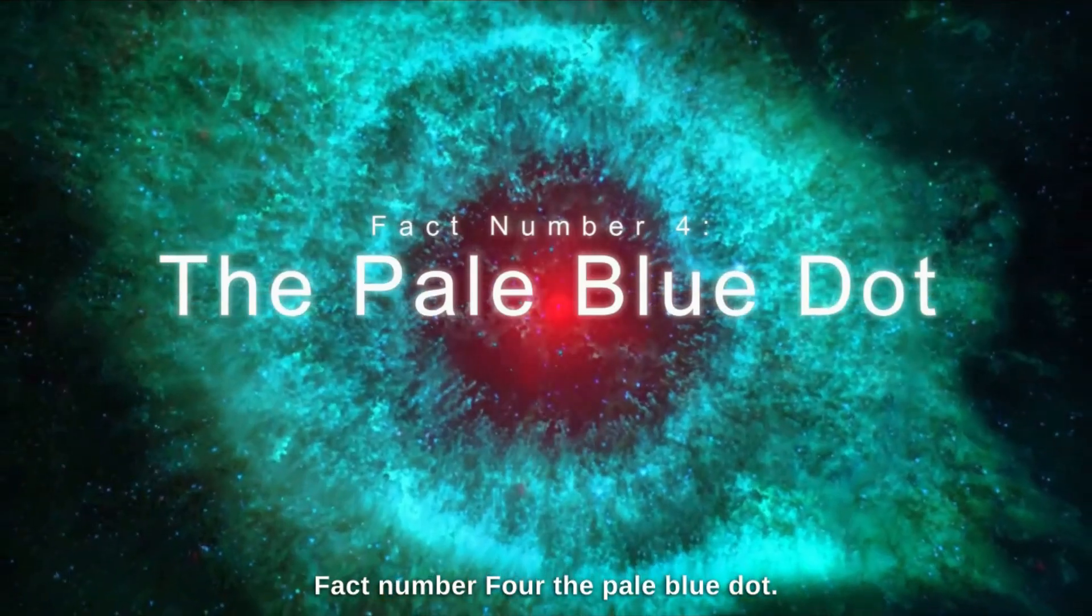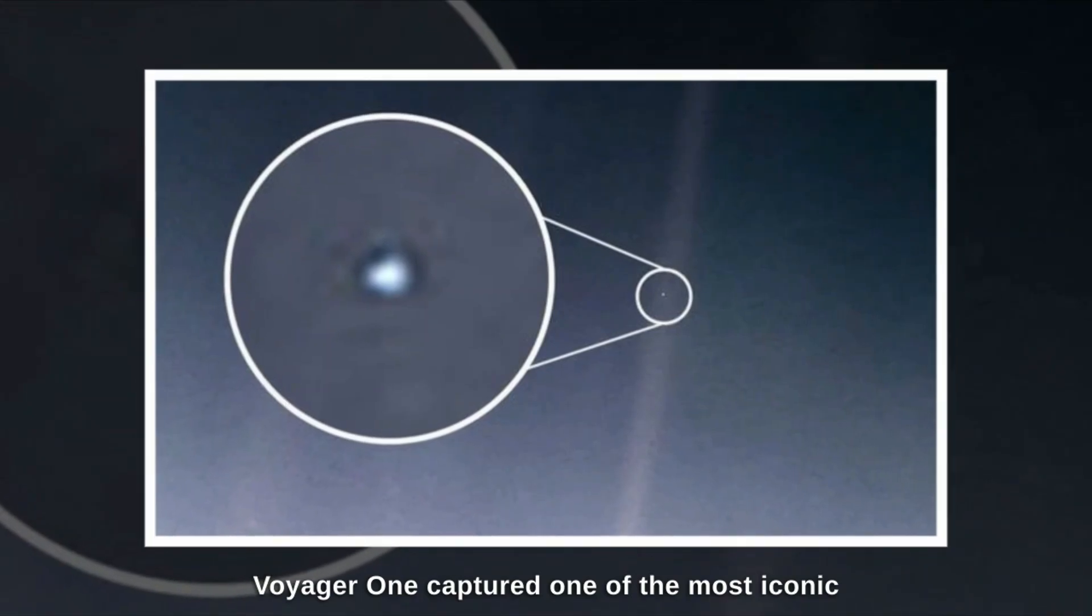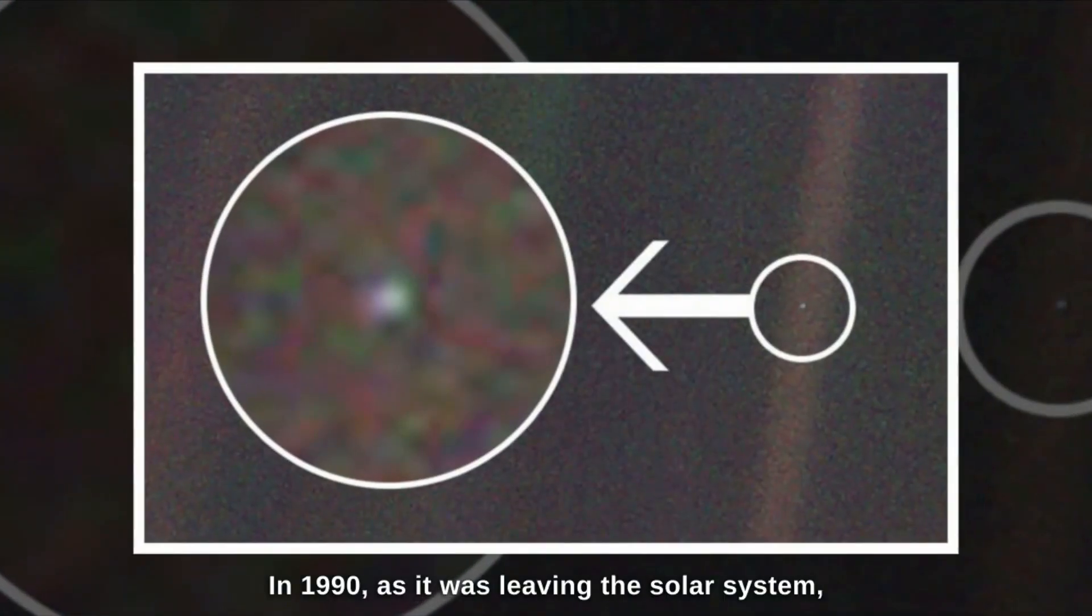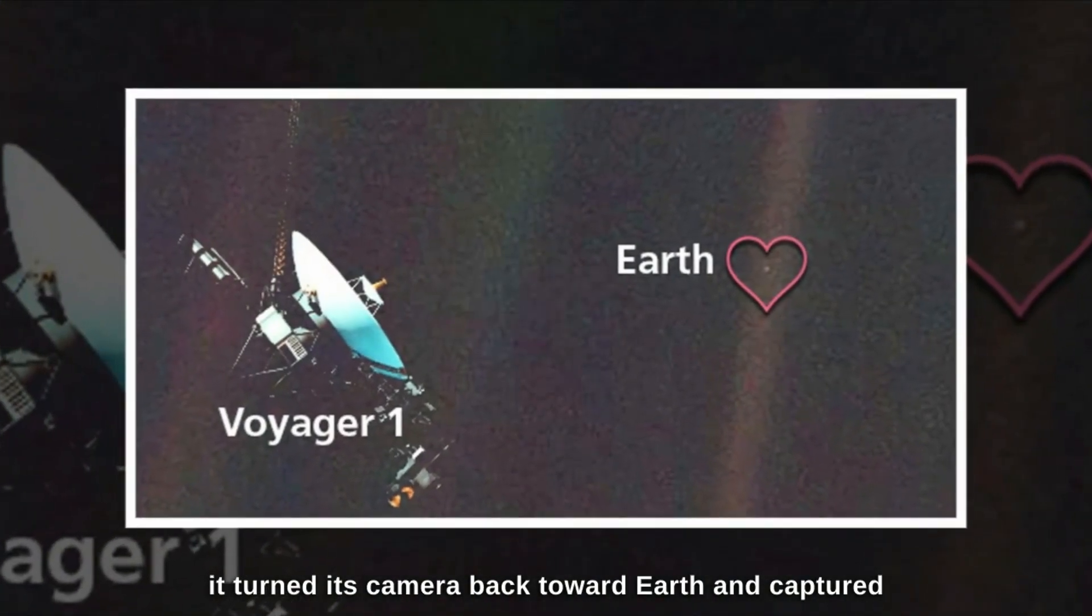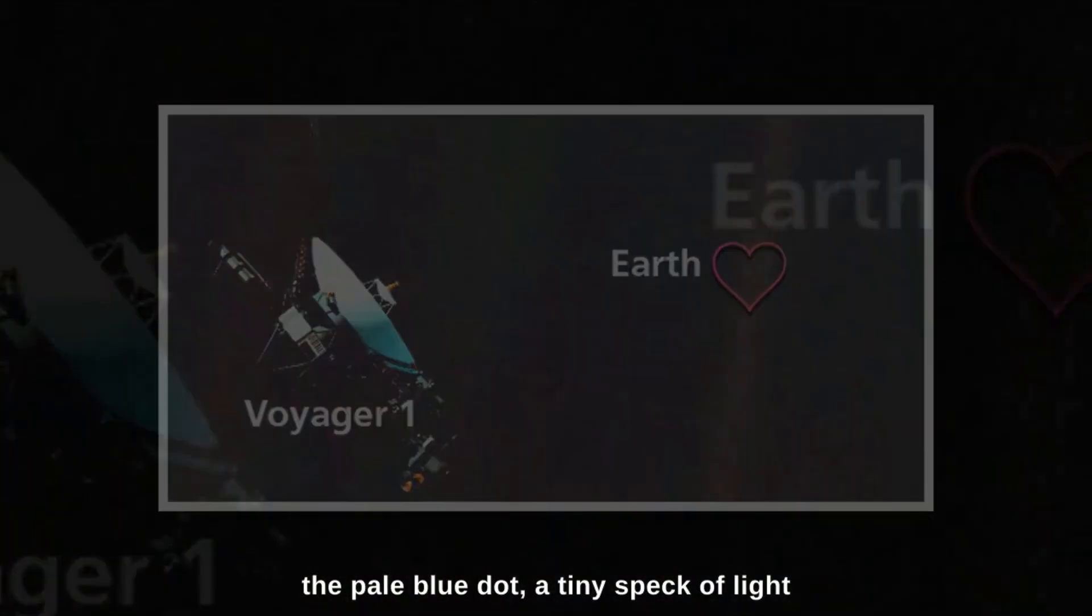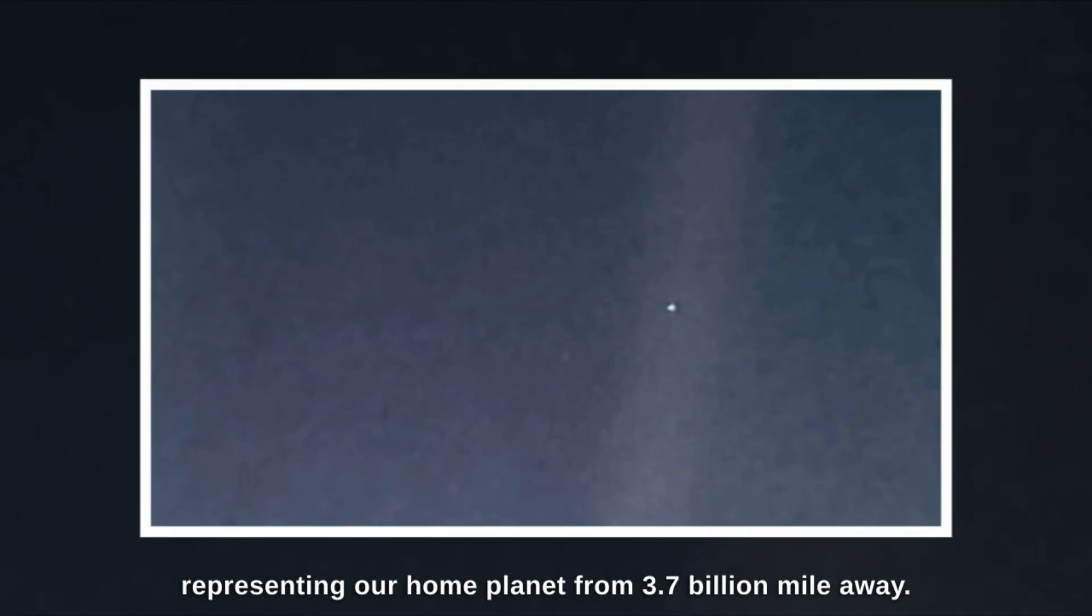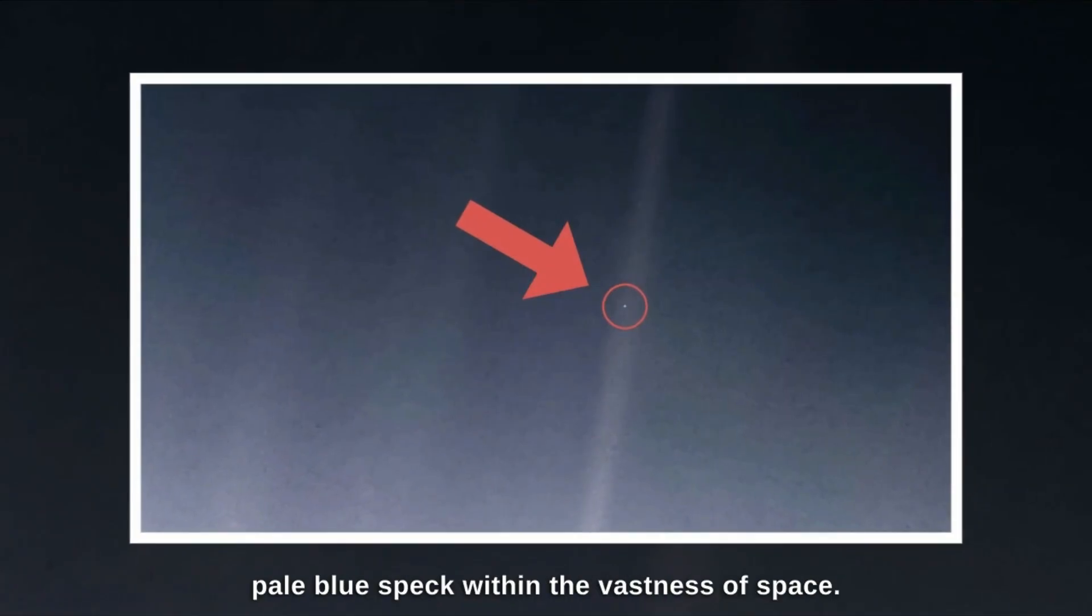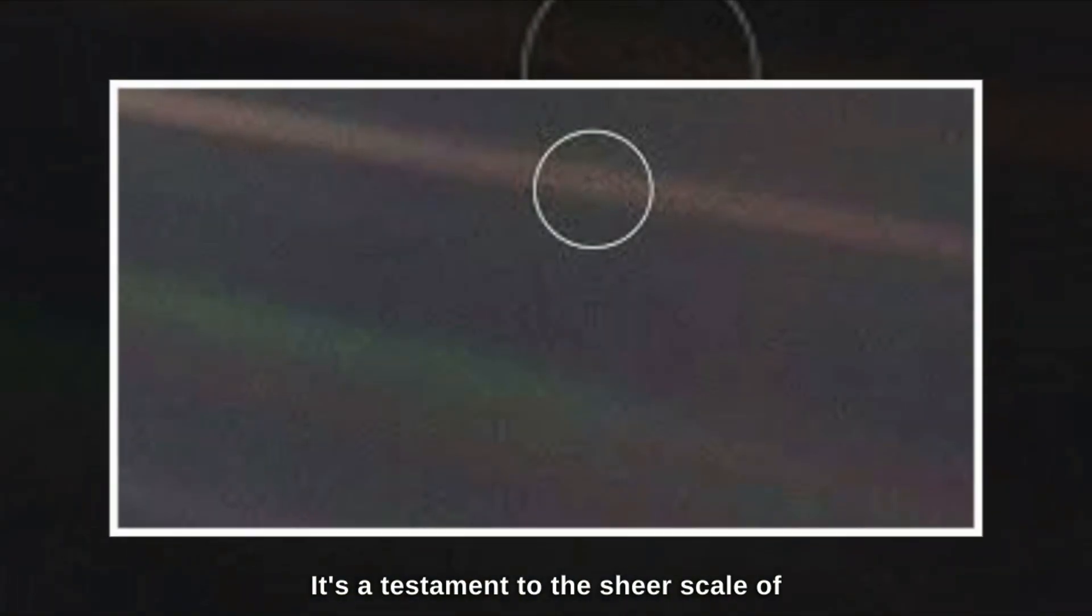Fact number 4. The Pale Blue Dot. Voyager 1 captured one of the most iconic photos in the history of space exploration. In 1990, as it was leaving the solar system, it turned its camera back toward Earth and captured the Pale Blue Dot, a tiny speck of light representing our home planet from 3.7 billion miles away. This remarkable photograph shows Earth as a tiny, pale blue speck within the vastness of space. It's a testament to the sheer scale of the universe and our place within it.